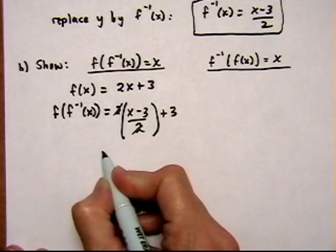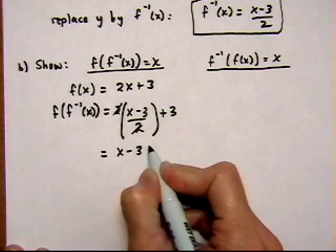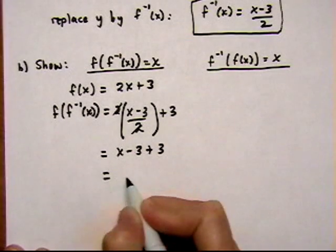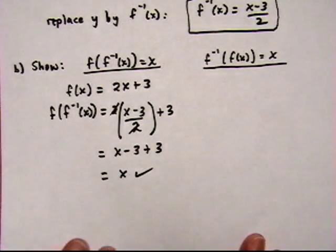2's cancel out, giving us x minus 3 plus 3. And the 3's cancel out, giving us x. So that one worked.